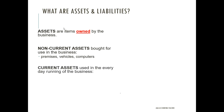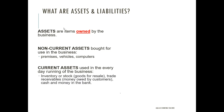Current assets, by definition, are things that are going to be there for less than a year — they'll generally be used, spent, or converted into cash within 12 months. These are things used in the everyday running of the business, such as inventory — your stock of goods that you're hoping to resell — trade receivables, which is money owed to your business by customers, and cash and money in the bank.